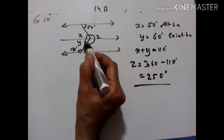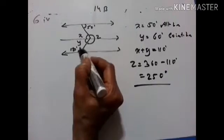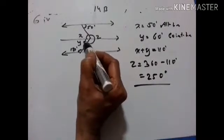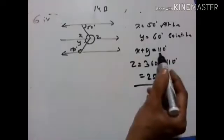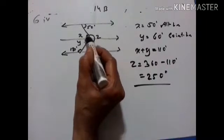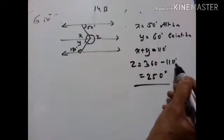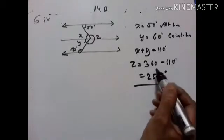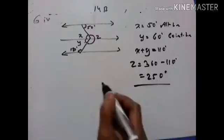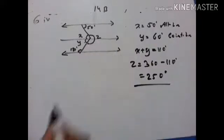X is equal to 50 degrees. These two are co-interior angles, so X plus Y is equal to 110. Now Z is equal to the reflex of X plus Y. So 360 minus 110 equals 250 degrees. Therefore, Z is equal to 250 degrees.